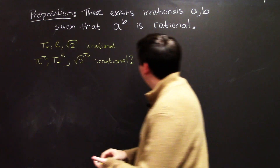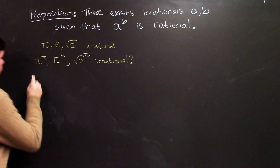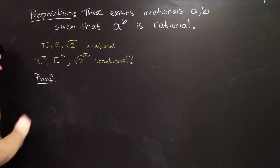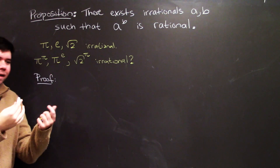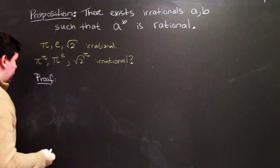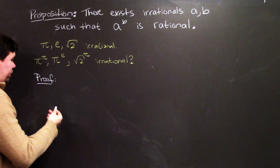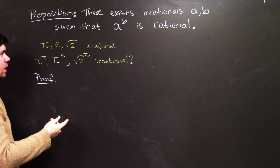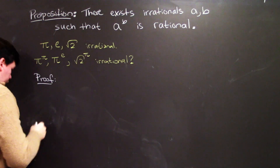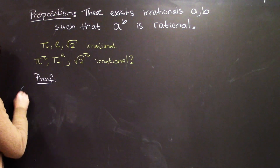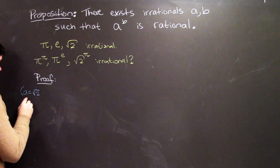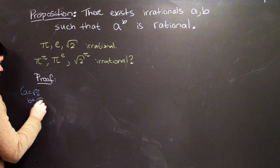Here's how we're going to prove this — I'll show you the proof and then we'll reflect on what we did. I'm going to offer a candidate for my irrational numbers a and b. Let's consider a and b both equal to the square root of 2.